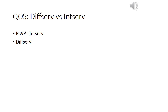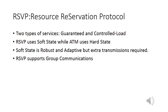Next I'll talk about Quality of Service — DiffServ versus IntServ. RSVP, the Resource Reservation Protocol, is a type of IntServ. It offers two services: Guaranteed, which provides firm end-to-end delay bounds, and Controlled Load, which has no firm delay bounds but ensures service doesn't deteriorate as network load increases. RSVP uses soft state — path and RESV messages are periodically refreshed.